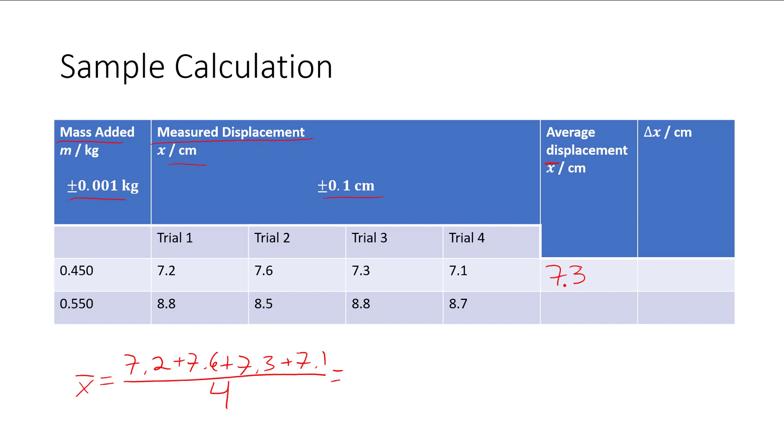Let's take the average of the second one. 8.8 plus 8.5 plus 8.8 plus 8.7, divide by four, getting exactly 8.7.